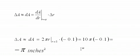So, when the radius shrinks one-tenth of an inch, your area of your circle is going to shrink about negative 3.14 square inches.